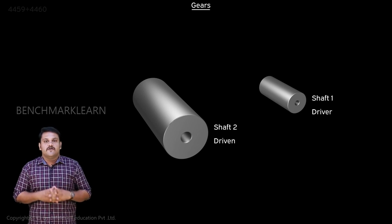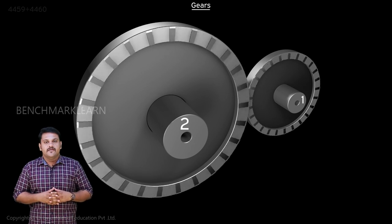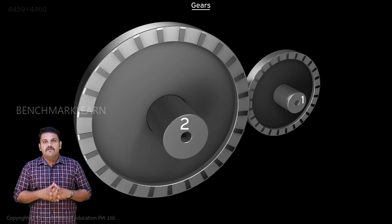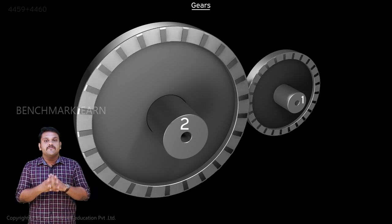To transfer the power between the shafts, two wheels are fixed on them and made to contact. The rotation of shaft 1 will make shaft 2 rotate due to the friction between the contacting wheels.